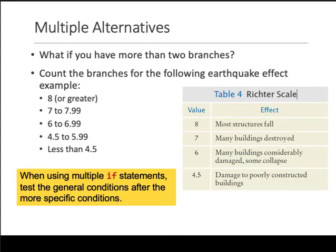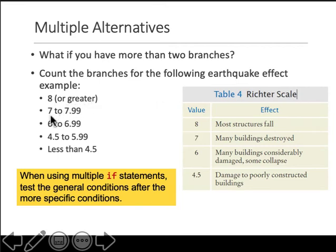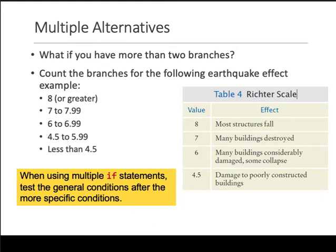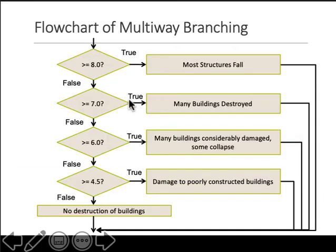If you have multiple alternatives in your code — not only one condition but multiple conditions — let's say you have multiple branches where you need to check something. For example, an earthquake on a Richter scale: if it's greater than 8, if it's between 7 and 7.9. If you only check something like 'if it's greater than 6', then all these conditions would apply, but we want to segregate them into multiple branches.